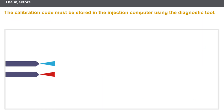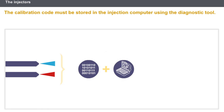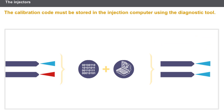Owing to manufacturing variations, the injector flow specifications are not completely identical. This may lead to engine operating problems and an increase in pollutant emissions. Some injectors have a code called a calibration code. This code relates to the difference in flow compared to a reference injector. The calibration code must be stored in the injection computer using the diagnostic tool. The injection computer corrects the injector opening time in relation to the calibration codes.